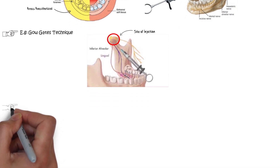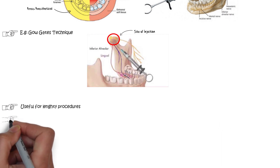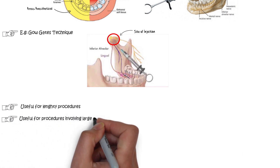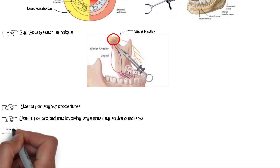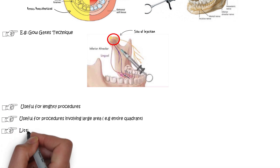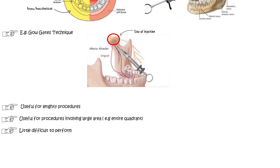These nerve blocks are very effective for lengthy procedures involving a large area or even an entire quadrant of the mouth. However, nerve block techniques are more difficult to perform, requiring careful attention to anatomical structures and landmarks inside the oral cavity. They require a certain level of knowledge and experience to fully master, but once mastered they are very helpful for performing extractions and other procedures.